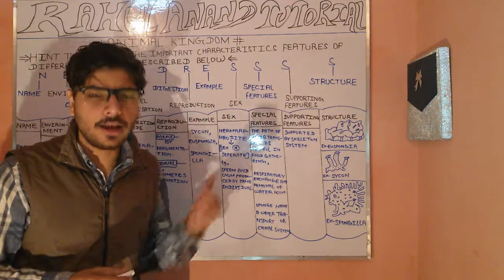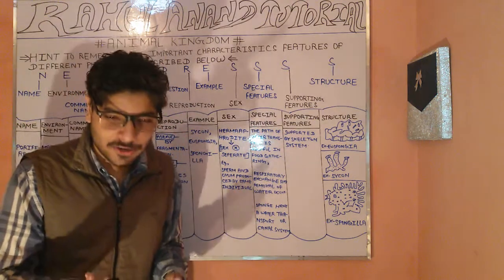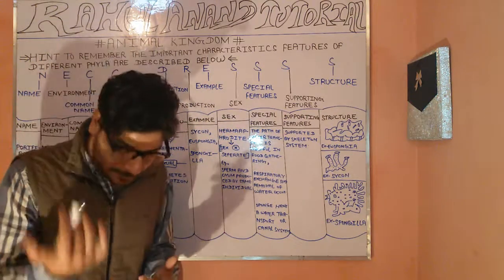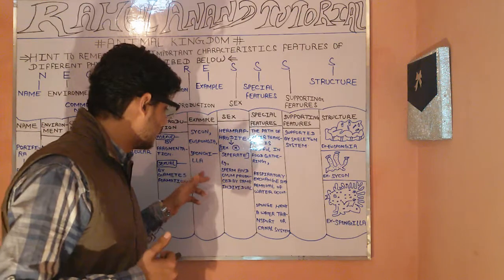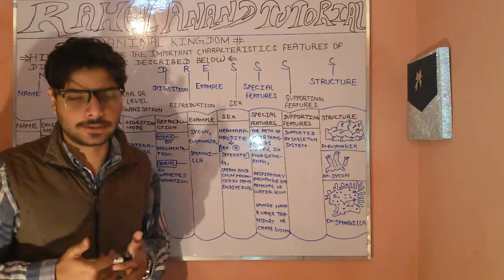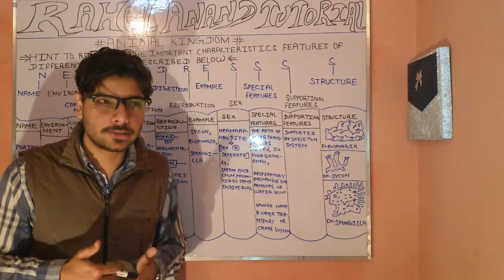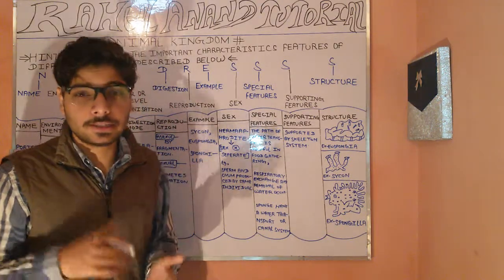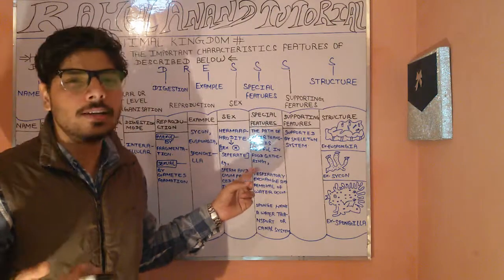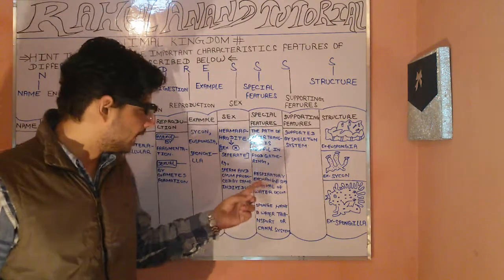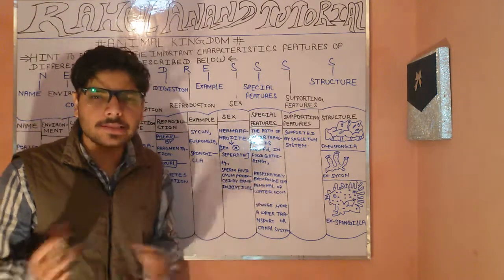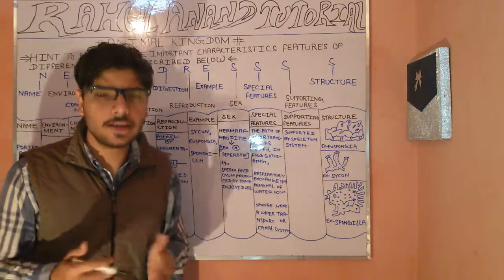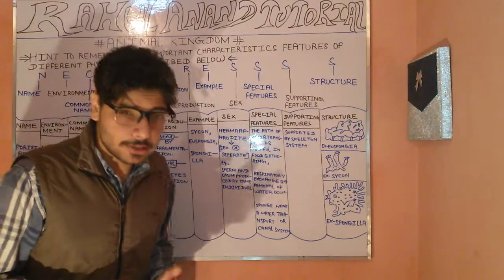For E, the examples of Porifera are Sycon, Euspongia, and Spongilla. Regarding sex: in Porifera, the sexes are not separated. Organisms in which male and female sex organs occur in the same body are known as hermaphrodites. So Porifera are hermaphroditic.